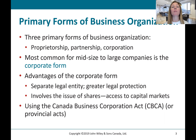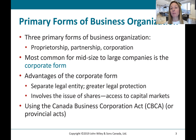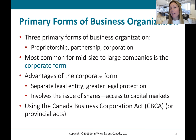There are three primary forms of business organization: a proprietorship, a partnership, and a corporation. The most common form for mid to large size companies is the corporate form. The advantages of a corporation are that there's no recourse against the individual shareholders' personal assets, so the most that they can lose is whatever they've invested in the company. There's no recourse in the case of bankruptcy or a lawsuit — the shareholders are protected.